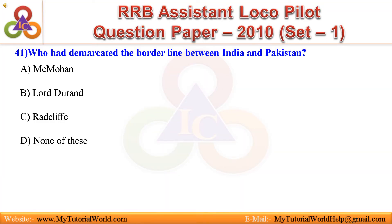Question 41: Who had demarcated the borderline between India and Pakistan? A. McKman, B. Lord Aerond, C. Radcliffe, D. None of these. Answer is Radcliffe.